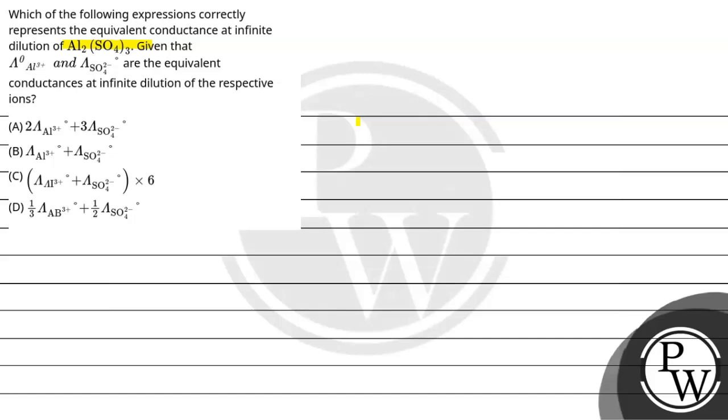First of all, let's see what the key concept is. The key concept here is Kohlrausch's law, which says that equivalent conductivity of an electrolyte at infinite dilution is equal to sum of conductances of the anions and cations and the individual constituents of the ions.